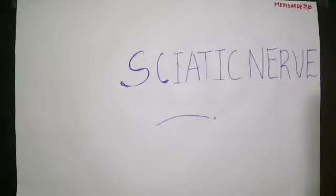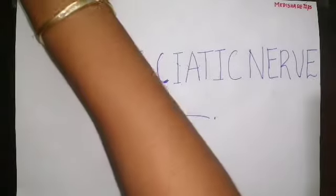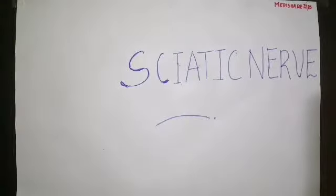In this video we are going to discuss an important topic: the sciatic nerve. This is a nerve which lies in the posterior compartment of the thigh. We have discussed about the posterior compartment of the thigh in the previous video. The sciatic nerve is a branch of the sacral plexus and it is the largest branch of the sacral plexus. It is the thickest nerve in the body.